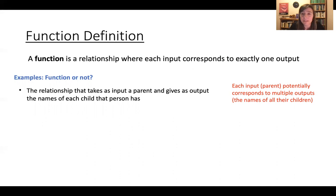And that's because each input, which is a parent, potentially corresponds to multiple outputs, the names of all their children. So in my case, if you put in me as an input, you would get out the name Phoebe. And that's it, because I only have one child. If you put in my mom, you would get the output Sarah David Robin because she had three children. So you don't need every input to correspond to multiple outputs to fail to be a function. You just need one input to correspond to multiple outputs and your relationship will no longer be a function.